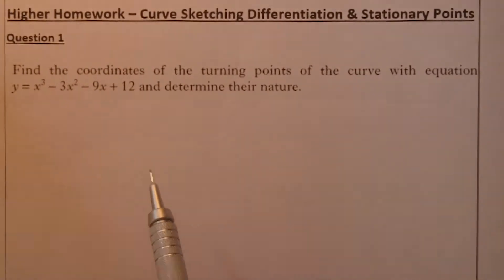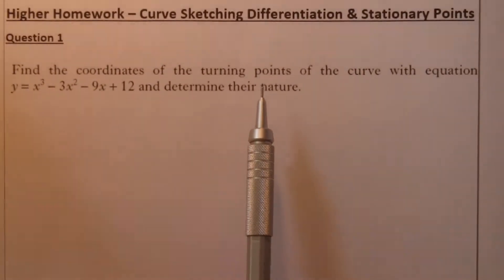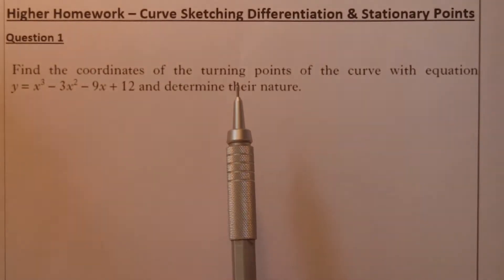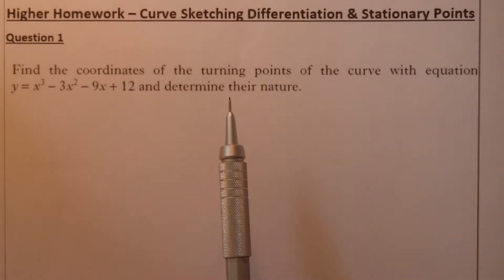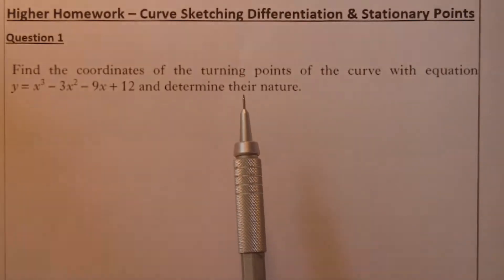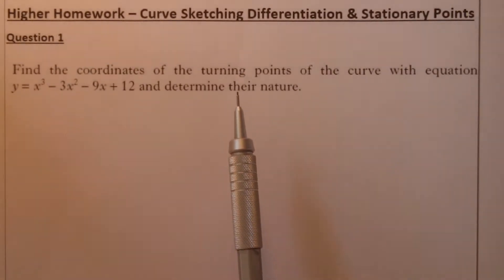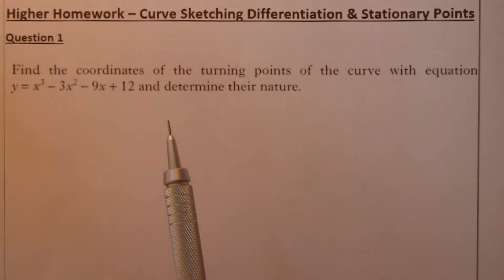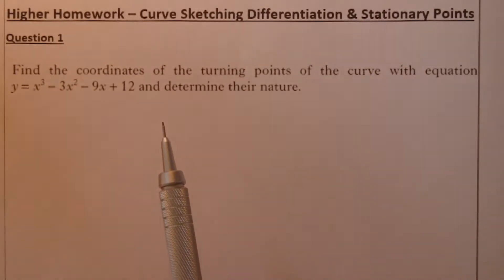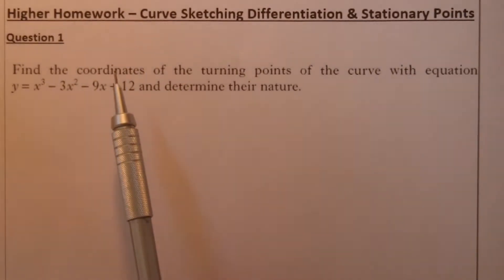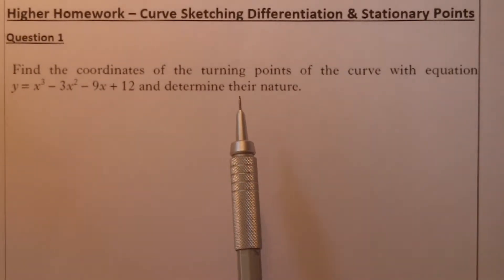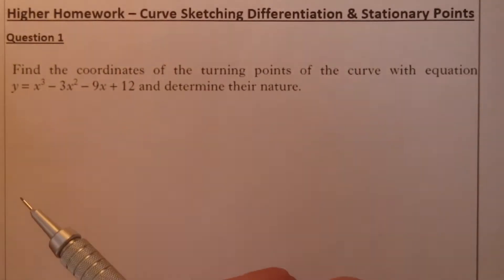So if I'm going ahead and trying to find the turning points, what I'm going to be thinking about is differentiating to find the gradient. I'm going to try and find where the gradient is equal to zero. From there I should get my x values, then my y values, giving me my coordinates. And then to determine their nature, I'll make up a nature table. Let's go ahead and do that.